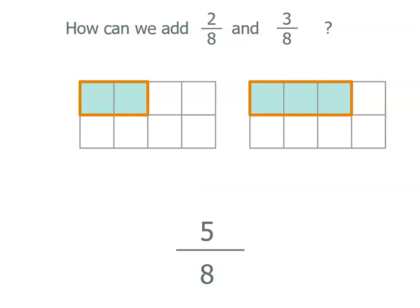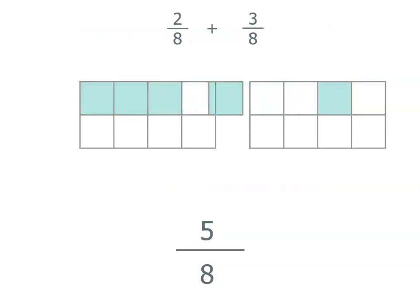If we move the 3 eighths over to where the 2 eighths are, how much of the whole do they take up? They take up 5 out of the 8 parts of that whole, and none of the other whole.